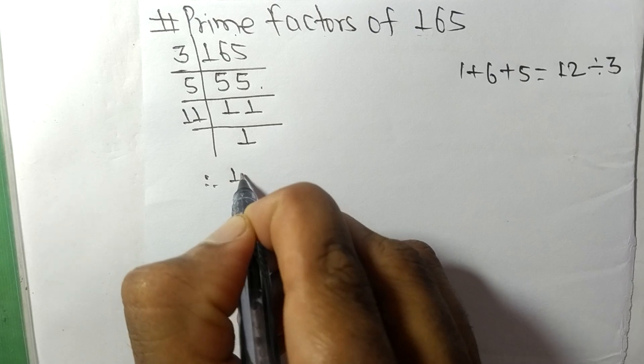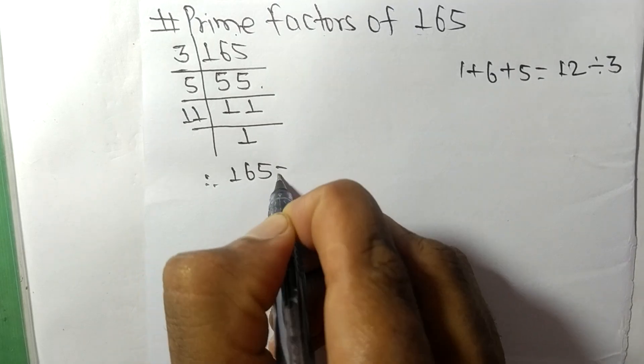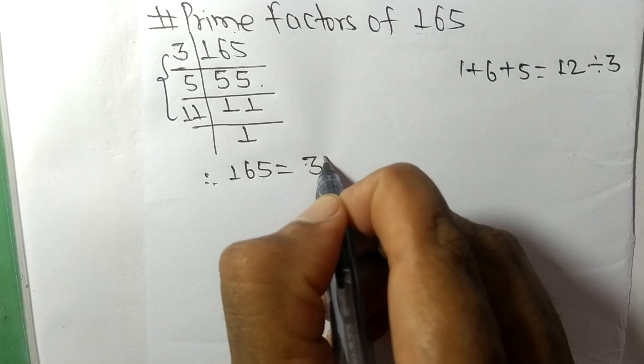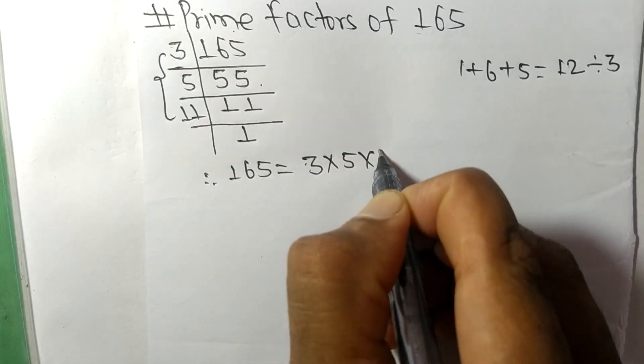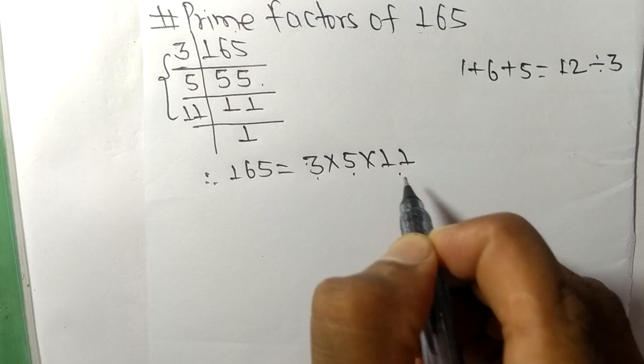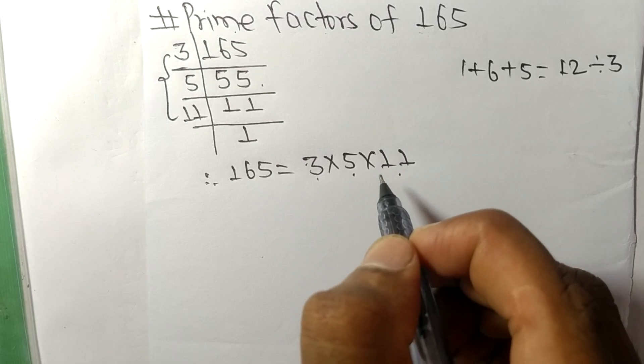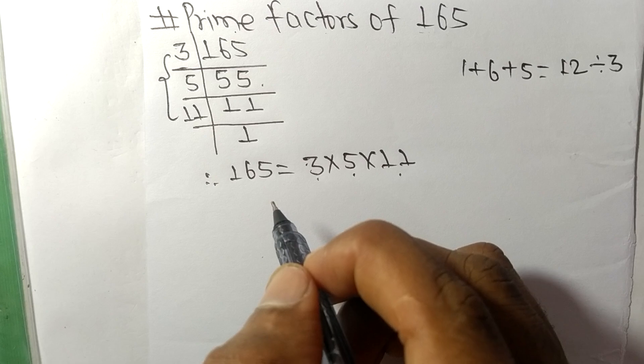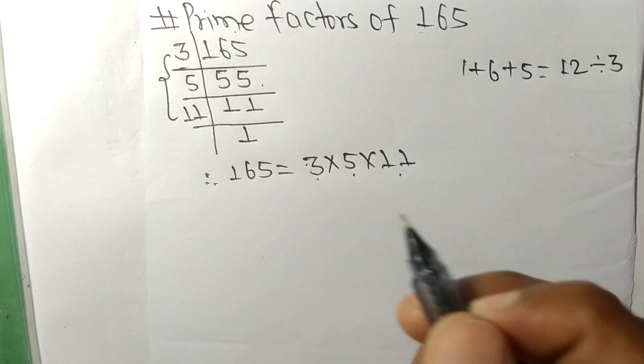So 165 equals, from this side, 3 times 5 times 11. So 3, 5, and 11 are the prime factors of 165. This much for today, and thanks for watching.